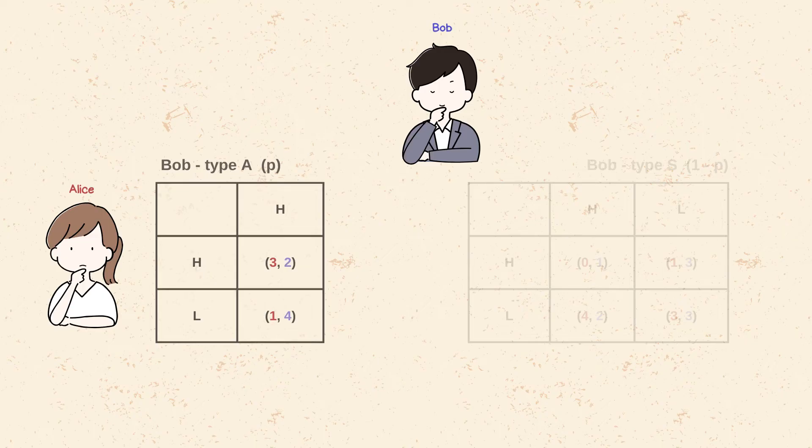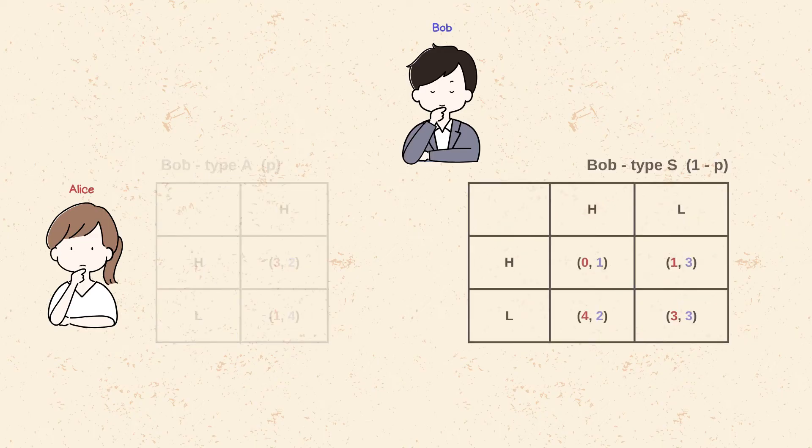If he is a risk-seeker or type S, then he would bid low. Hence, the other option will be eliminated.